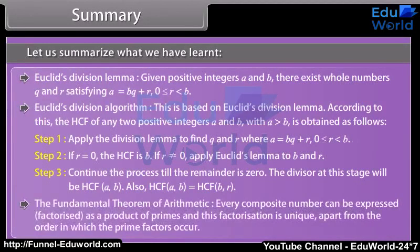The Fundamental Theorem of Arithmetic: Every composite number can be expressed (factorized) as a product of primes, and this factorization is unique, apart from the order in which the prime factors occur.